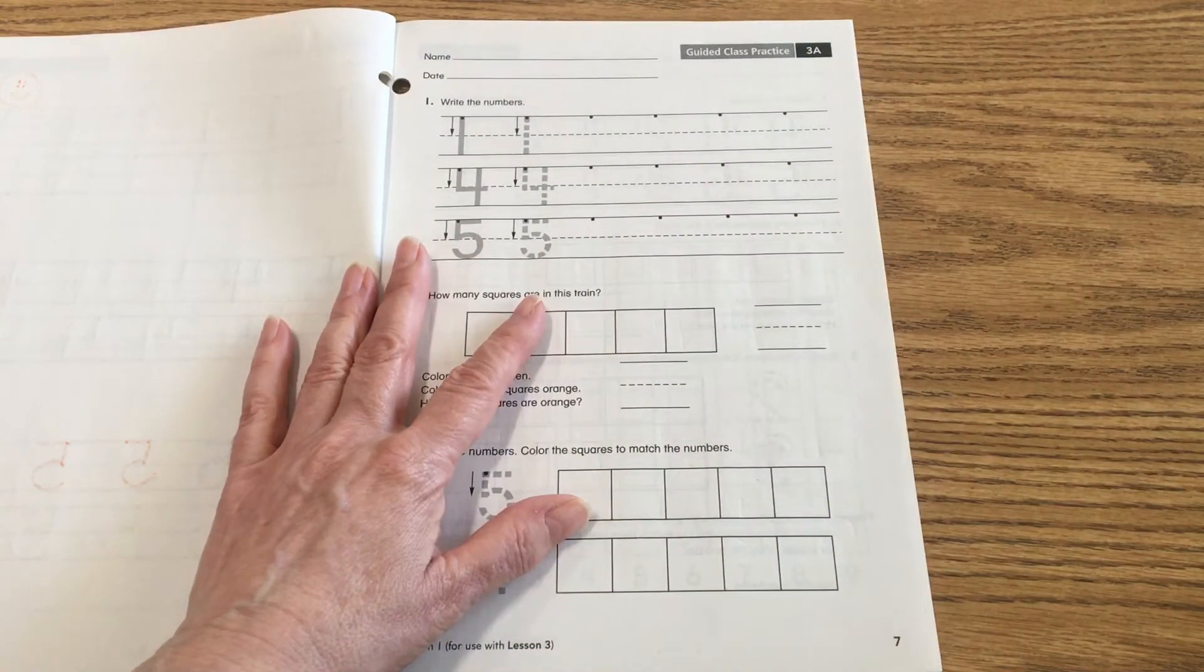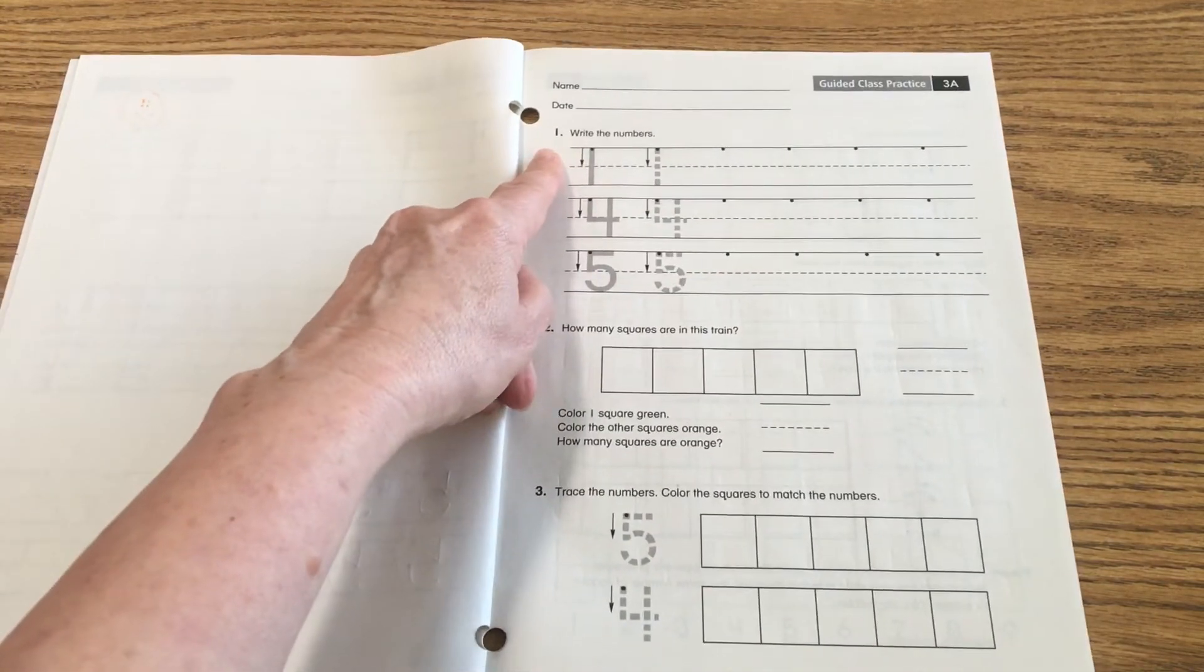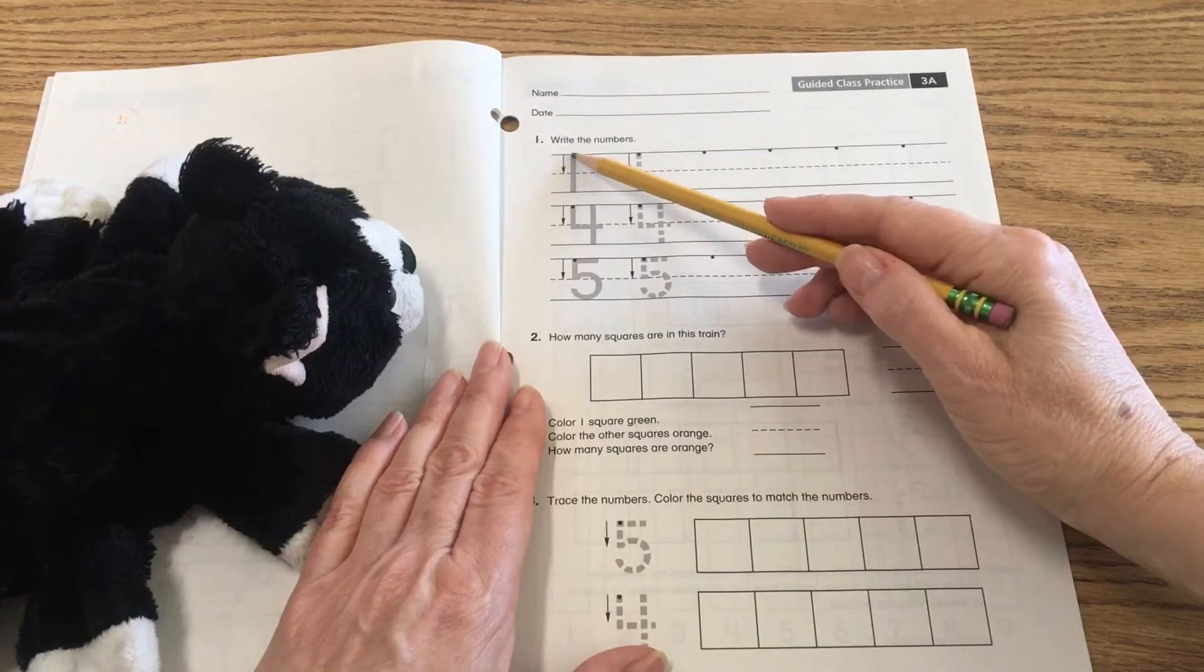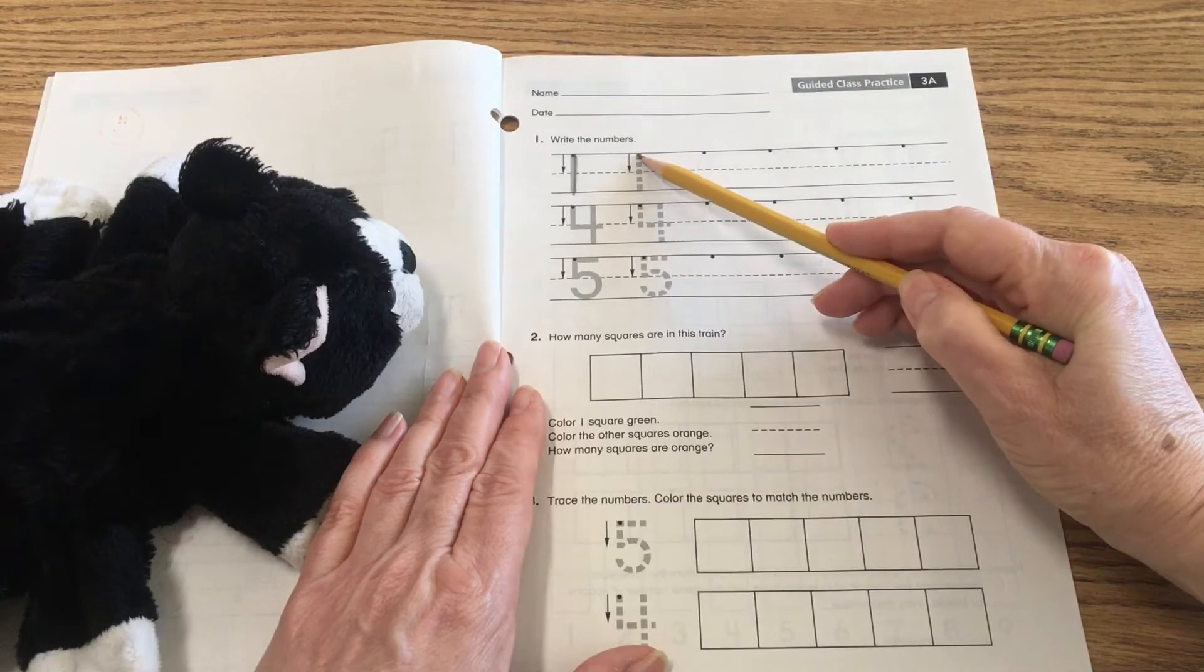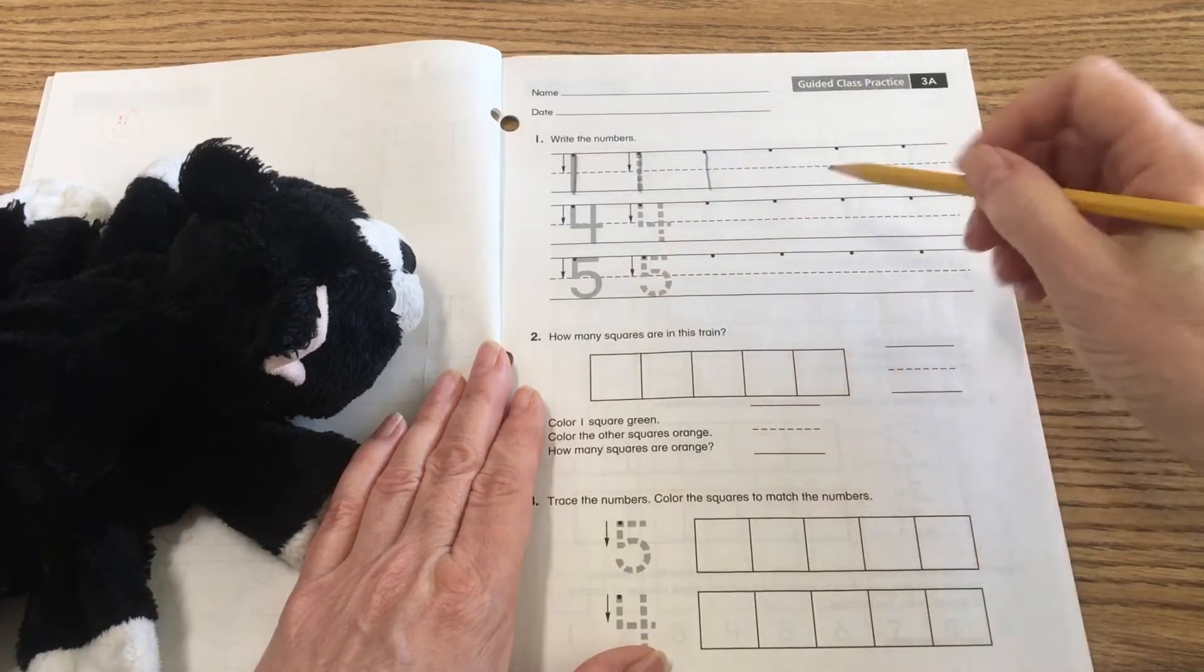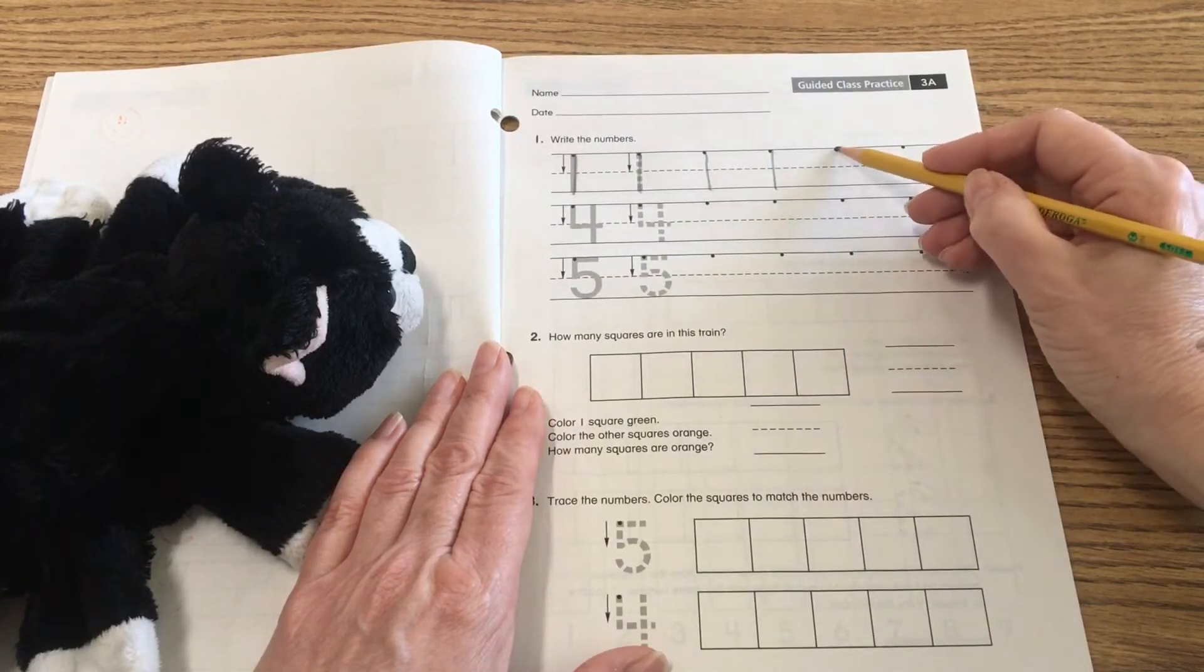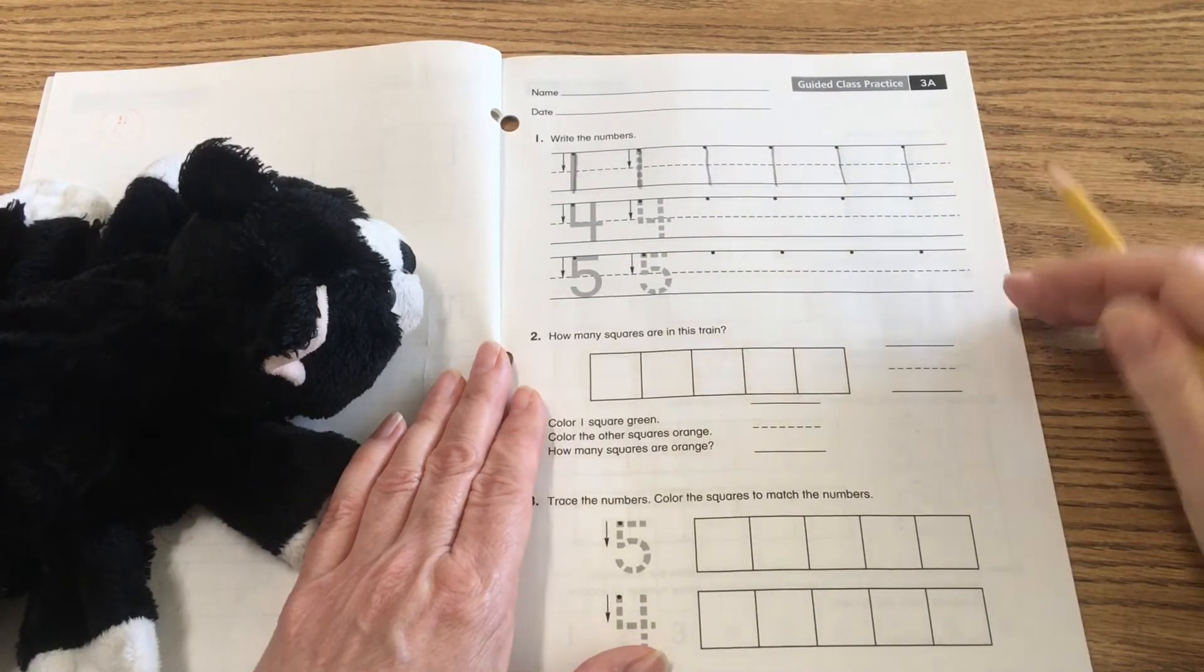So you're going to go ahead and start at number one. If you can point to the number one right at the top of the page there, we're going to practice writing our one. So we start at the dot, you follow the arrow, and go down. Start at the dot, follow the arrow, and go down. Start at the dot, follow the arrow, go down. Start at the dot, follow the arrow, go down, and that is our number one.